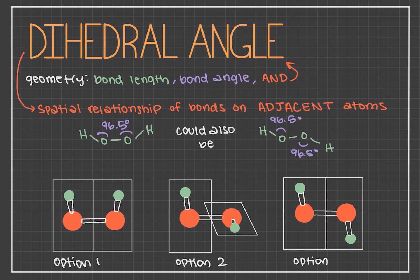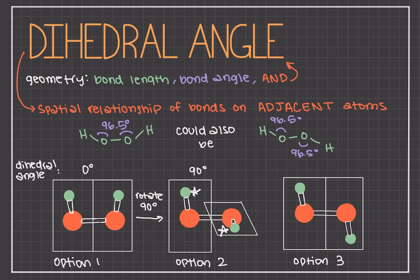There are three possibilities for hydrogen peroxide's dihedral angle. You can visualize these dihedral angles if you have a model where you can put together the molecule. If you hold one of the O-H bonds fixed and rotate the other, you can see how the different dihedrals look. Rotating the right plane 90 degrees gives option two where the dihedral angle between the hydrogens is 90 degrees. Rotating it again another 90 degrees gives option three where the dihedral angle between the hydrogens is 180 degrees.